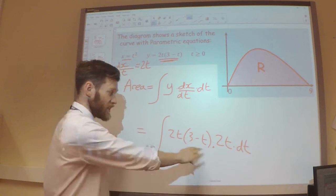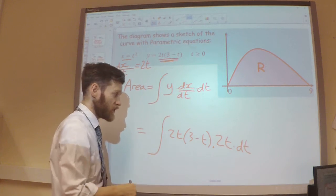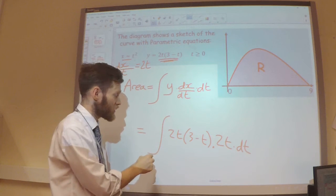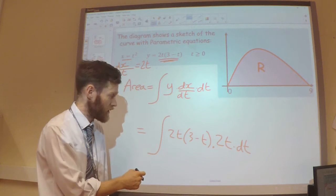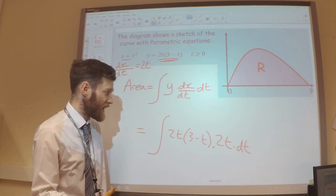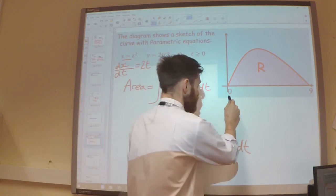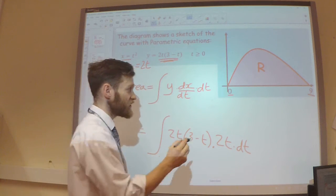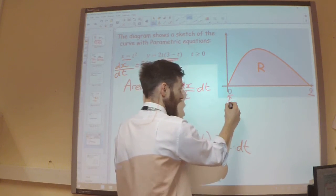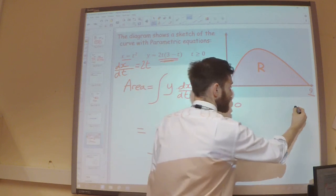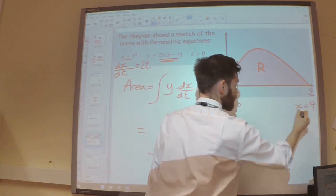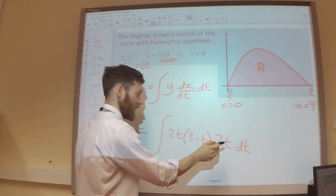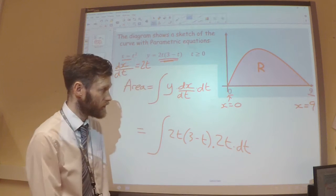I can perform this integration quite easily now. I do need to think about the limits now, though. Because what am I integrating between? A really common mistake here is just to substitute the 0 and the 9 in straight away without actually thinking too much about it. Let's just remember that these are my x coordinates, and I'm not integrating with respect to x. I'm integrating with respect to t.